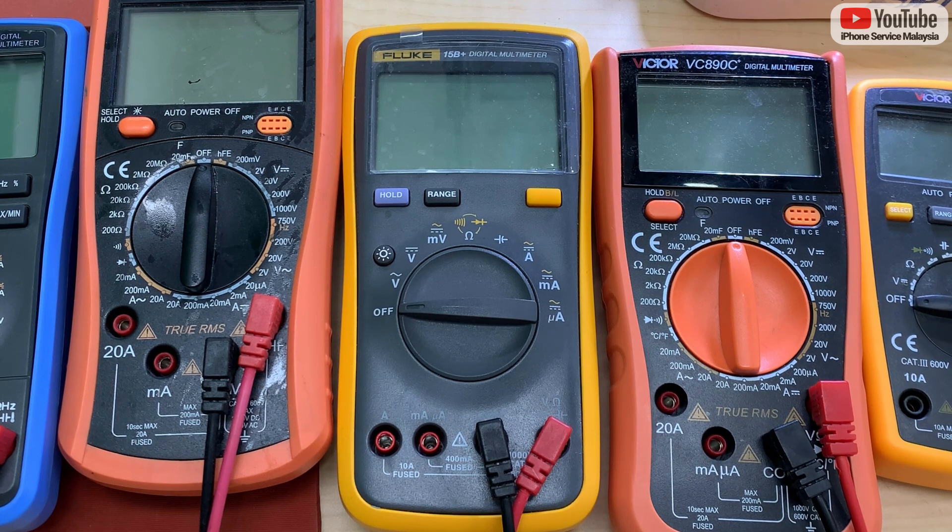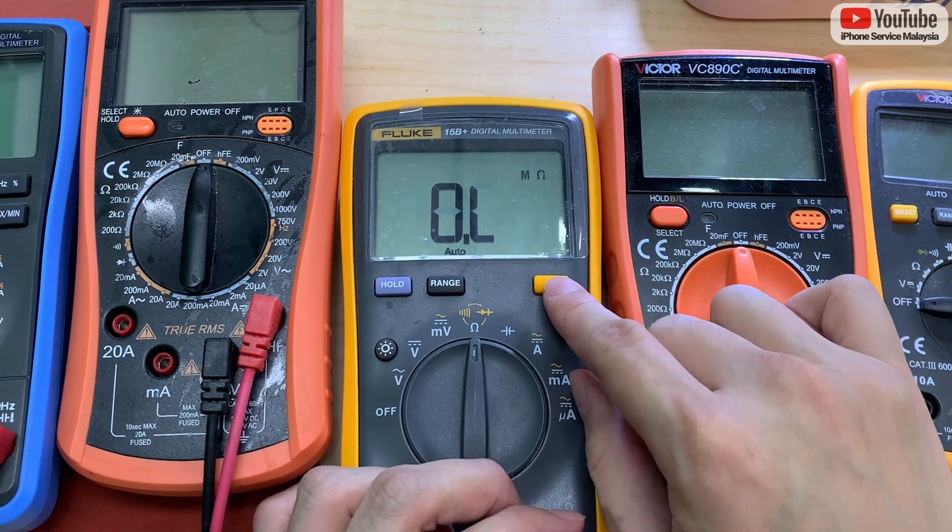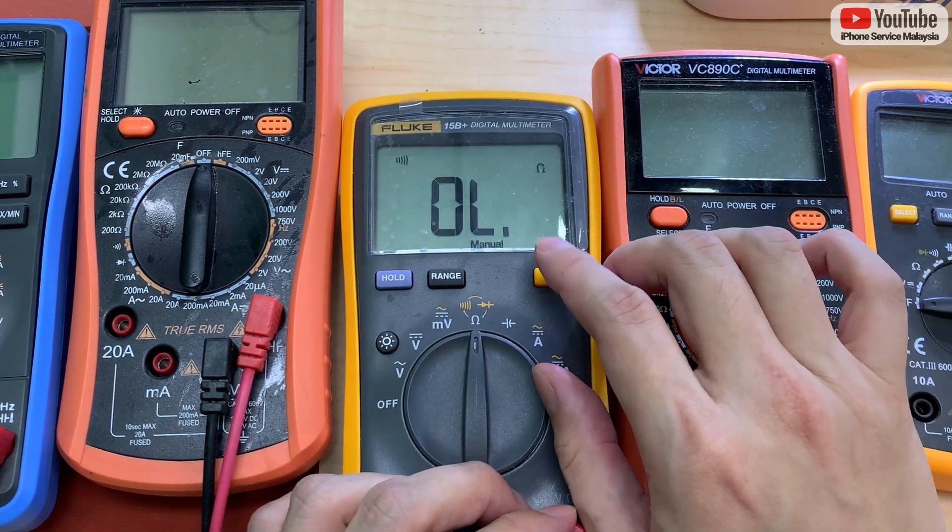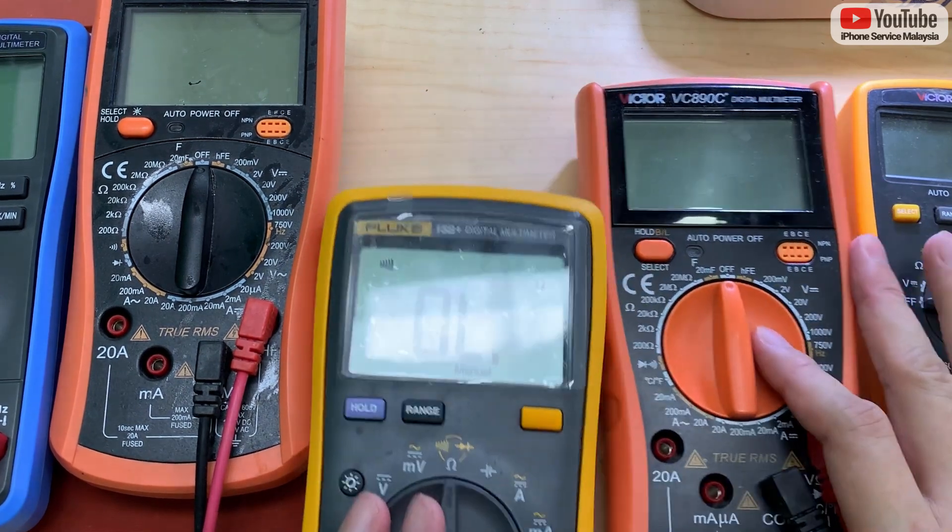Don't buy that kind of multimeter that cannot switch between this kind of things. Don't buy the one that cannot switch between the diode and the buzzing mode. So now I'm going to show you, let's say take an example, this one.